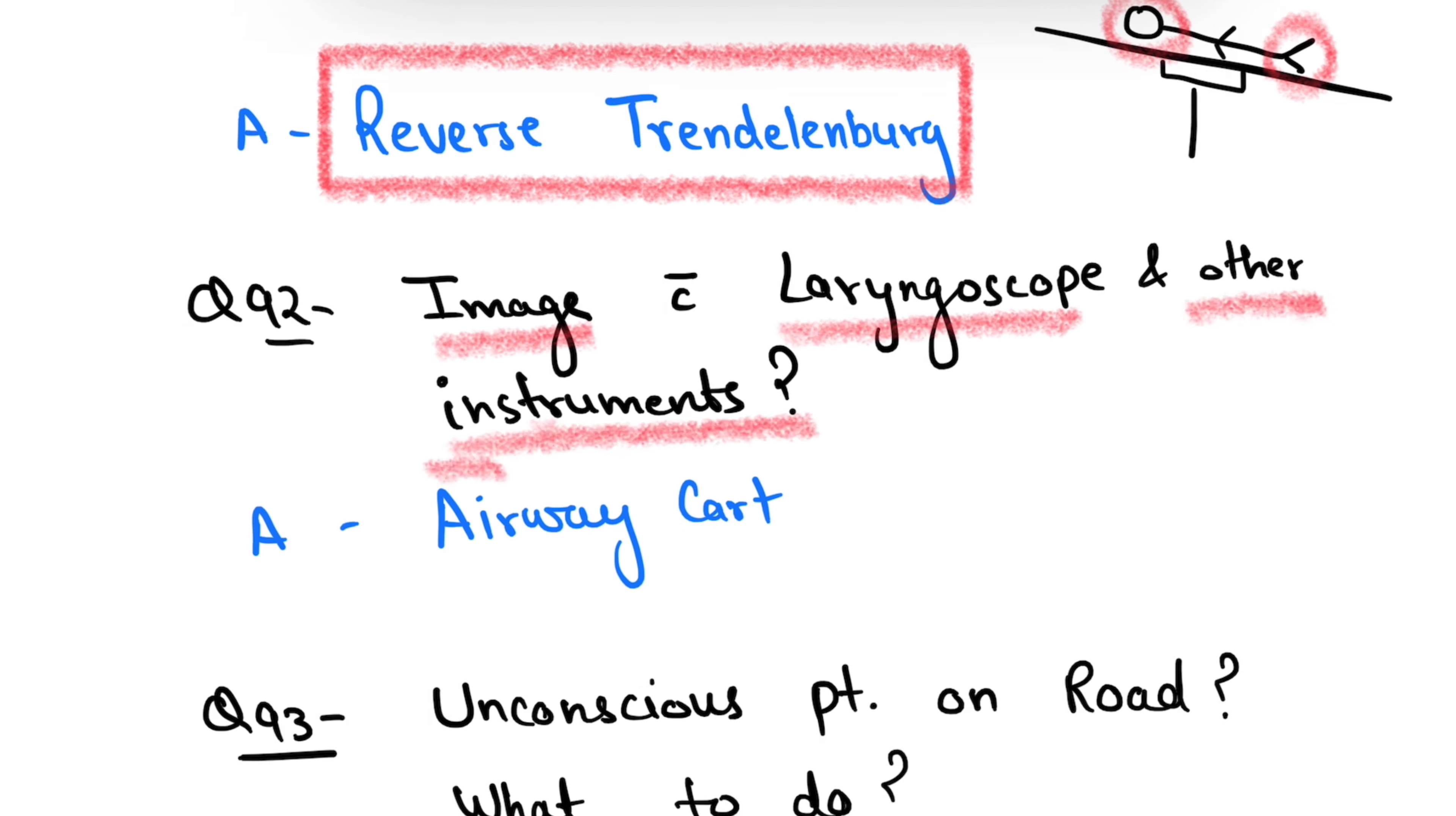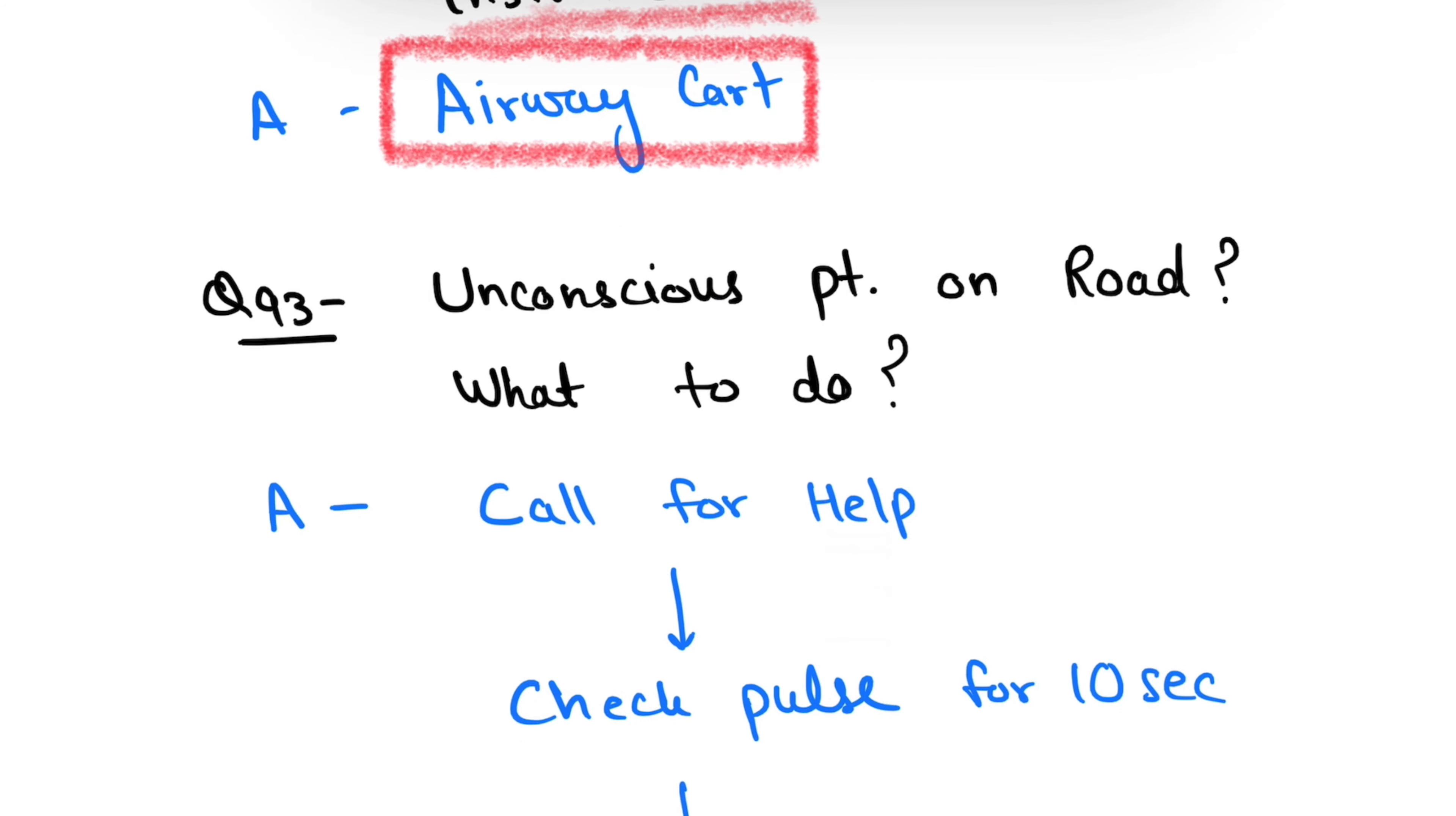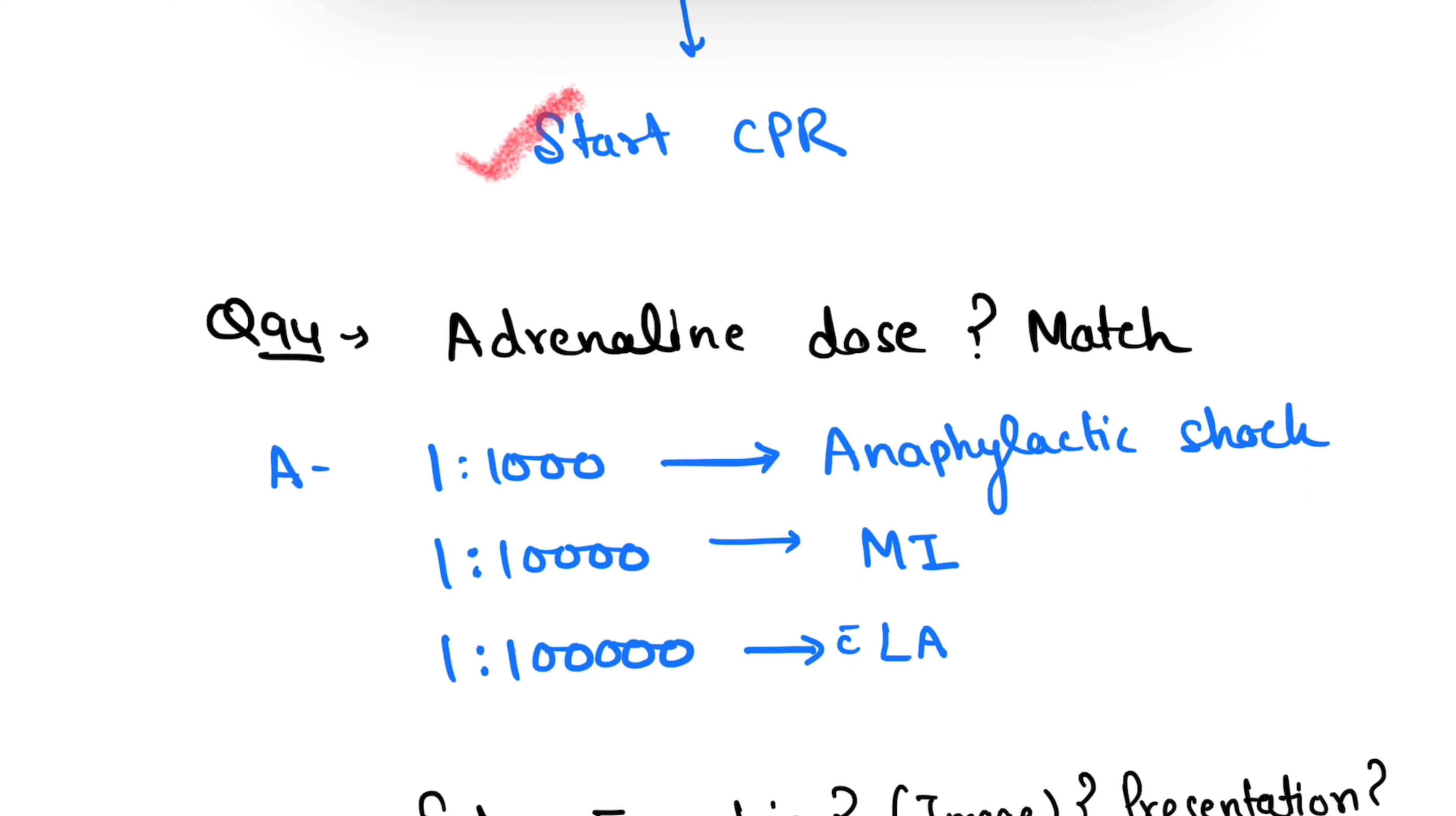Another question: unconscious patient on road, what to do next? You have to call for help first, then check for pulse for 10 seconds, then start CPR. Question number 94: adrenaline doses were asked and we have to match these. 1 to 1000 is given in anaphylactic shock, 1 to 10,000 is given in myocardial infarction, and 1 to 1 lakh is given with local anesthesia like lignocaine.